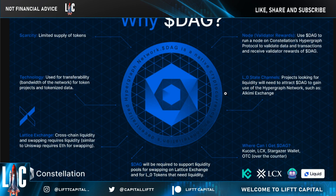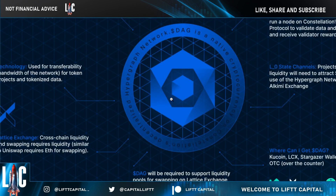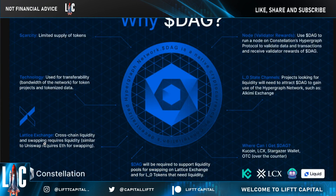What's going to be providing cross-chain liquidity is something called the Lattice Exchange. The Lattice Exchange is similar to Uniswap for Ethereum — it's the swapping mechanism for Constellation DAG.